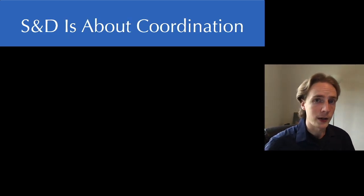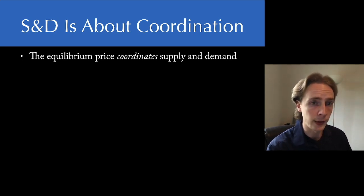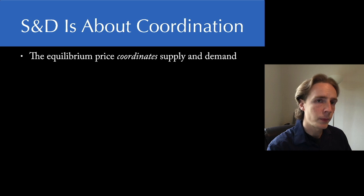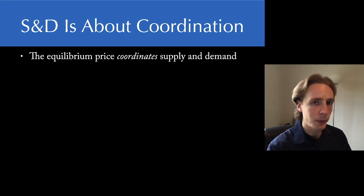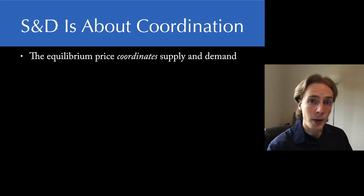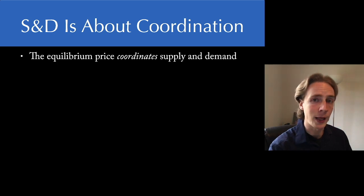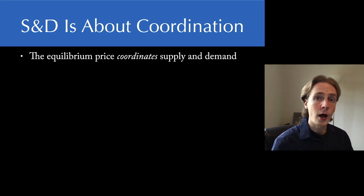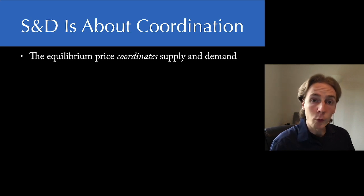So what's the point of supply and demand? Of course we can explain changes in prices and quantities, but so what? Supply and demand is ultimately a story about coordination. We spent the first part of the class talking about how an economy coordinates plans. I make plans to consume things; somebody else is making plans to produce things. Are those plans compatible? If they're not compatible, we're going to be wasting resources — either they produce too much, or I'm going to be disappointed in my plans to consume. My plans to consume have to be compatible with other people's plans to consume.